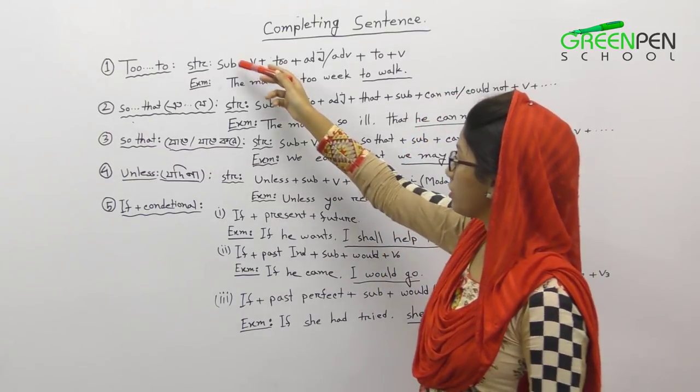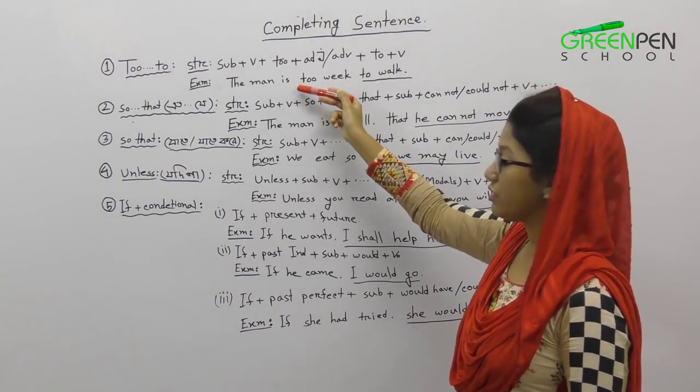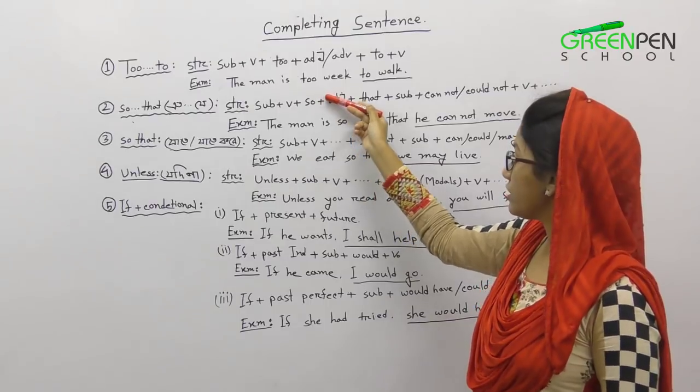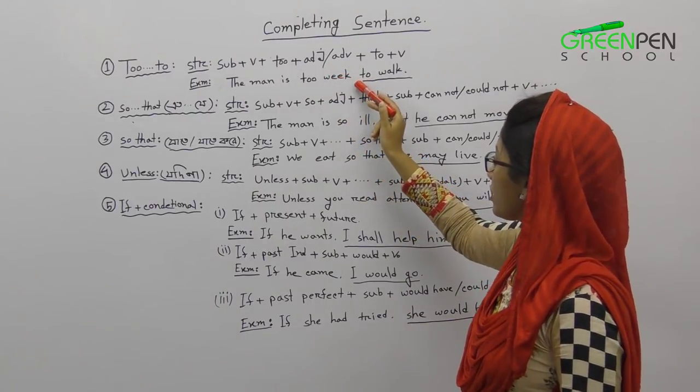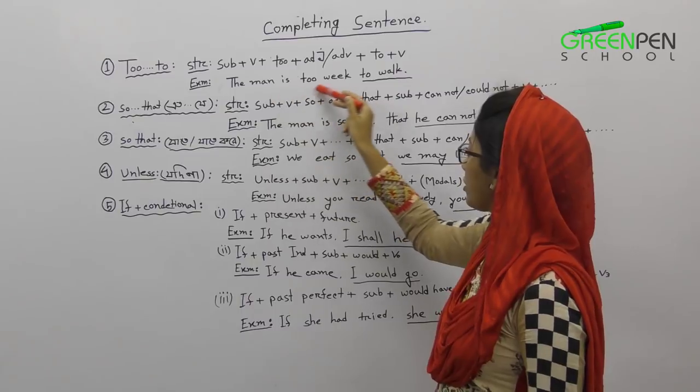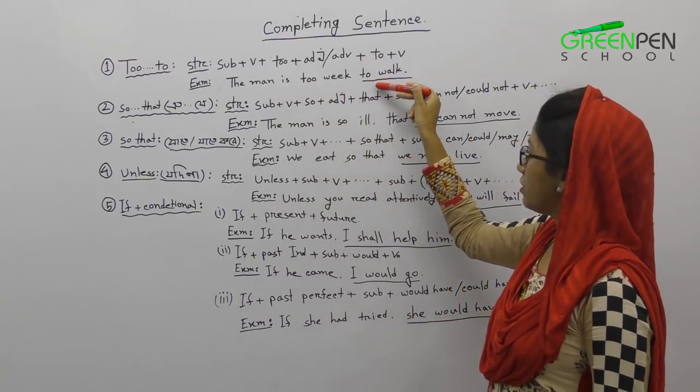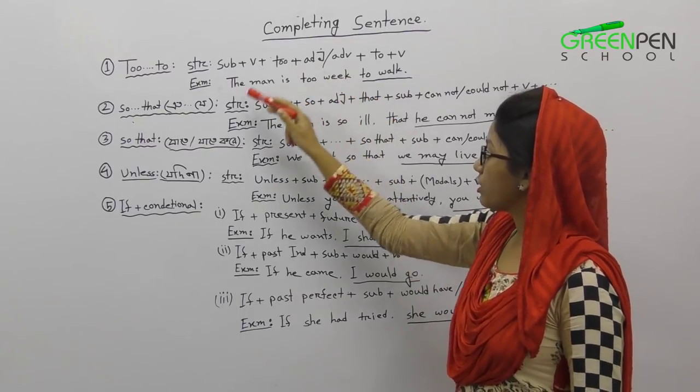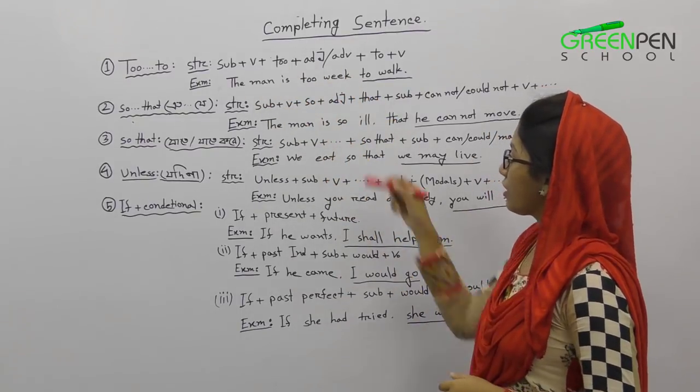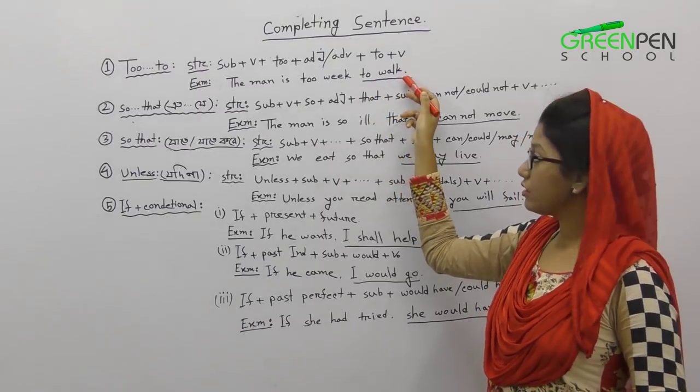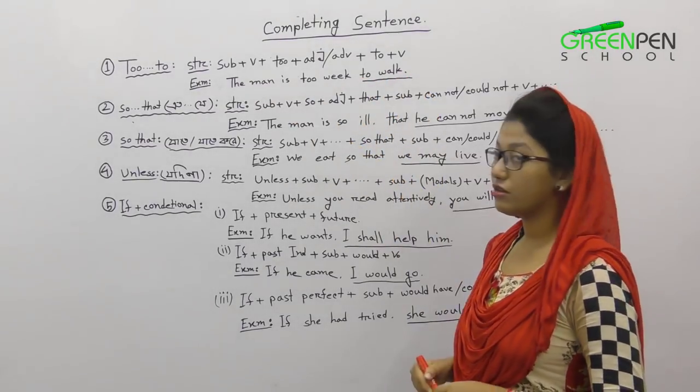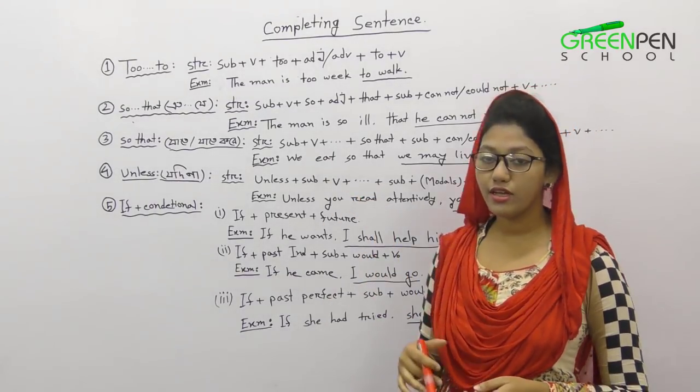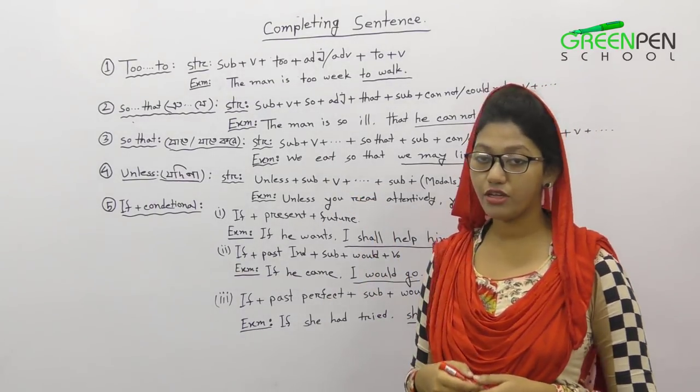The verb is is, auxiliary verb. The adjective is weak. If you want to choose the verb, you will be able to do the next verb. The second verb is the base form. Therefore, the sentence will be: The man is too weak to work, and you will complete the sentence correctly.